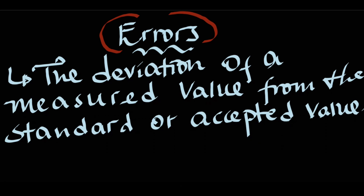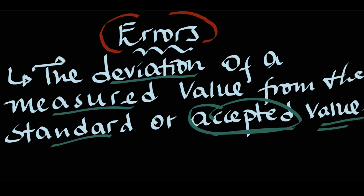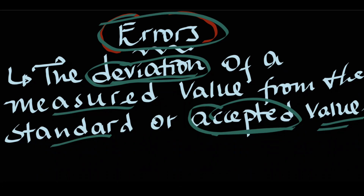The error of the non-regional is the deviation of the measured value from the standard or the accepted value. We are going to talk about the standard value. It is the value which is not actual or not true.